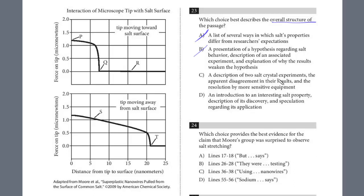How about C: 'A description of two salt crystal experiments, the disagreement in the results, and the resolution.' Again, this is specific, but it's not accurate. D: 'An introduction into an interesting salt property'—it stretches out in the nanoworld—'description of the discovery'—it was by accident—'and speculation regarding its application.' This is definitely the answer. Again, if you're not certain, return to those at the end.